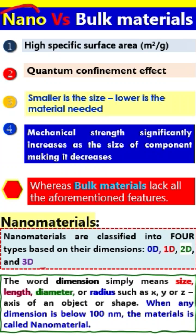The difference between nanomaterial and bulk materials. Bulk means big volumetric materials. There are basically four characteristics of nanomaterial which make it different from bulk material. The first is high specific surface area. Surface area plays a very important role in nanotechnology.